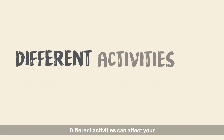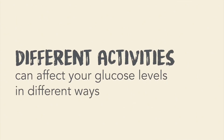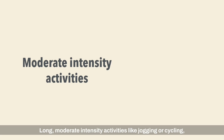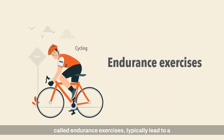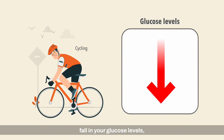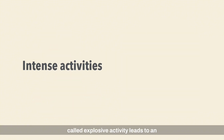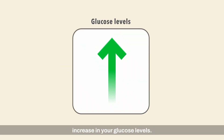Different activities can affect your glucose levels in different ways. Long moderate intensity activities like jogging or cycling, called endurance exercises, typically lead to a fall in your glucose levels. While short bursts of intense activities, called explosive activity, leads to an increase in your glucose levels.